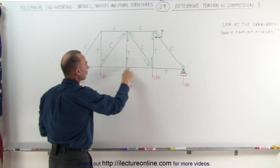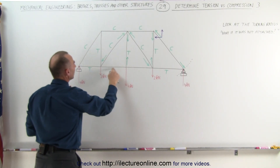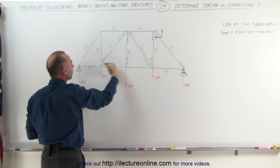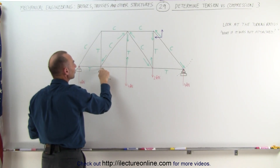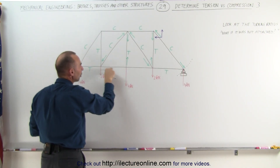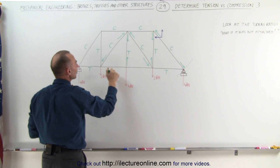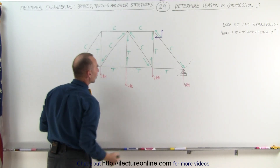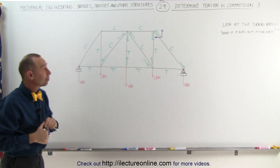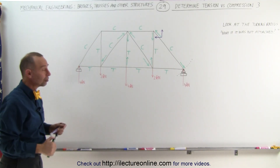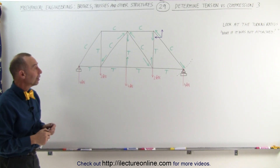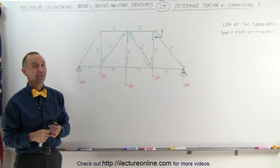Finally, we need to look at these last two members. Since this beam is pushing on this joint in this direction, there must be a force in the opposite direction pulling it the other way — that means this beam must be under tension, and this beam must be under tension as well. And that's how we slowly work our way through the entire structure to determine which beams are under tension and which are under compression.